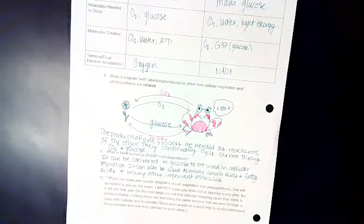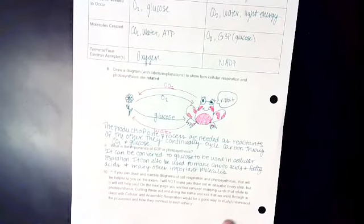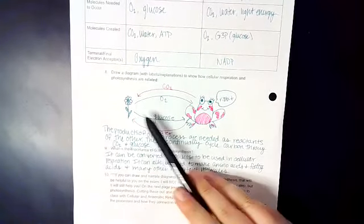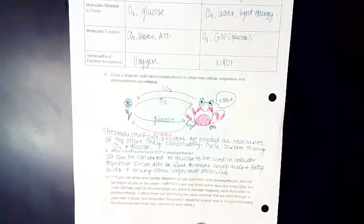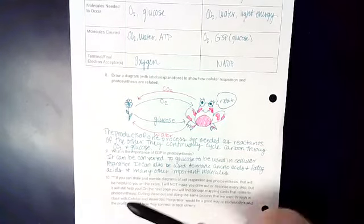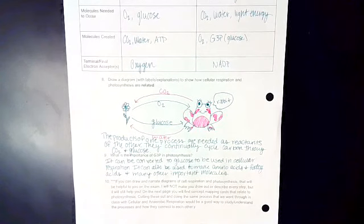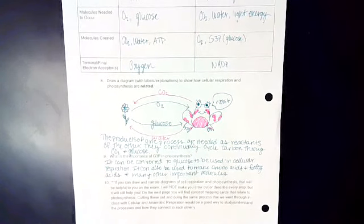Number eight, draw a diagram to show how cellular respiration and photosynthesis are related. So I have a nice picture of a flower and a frog here. So our frog is going to be representing cellular respiration. Our flower is going to be representing photosynthesis.